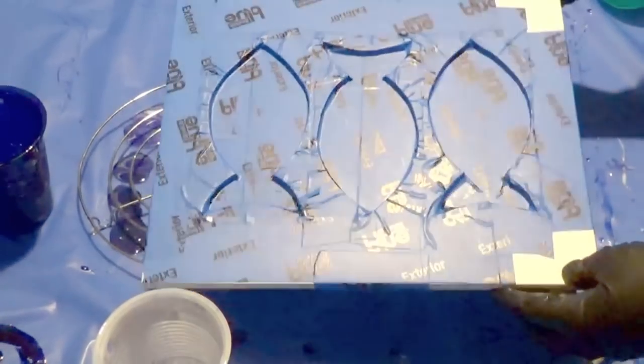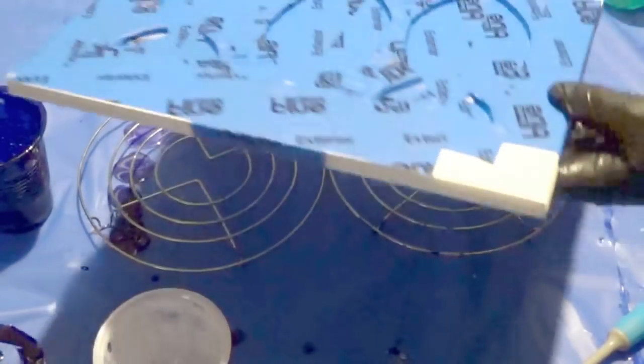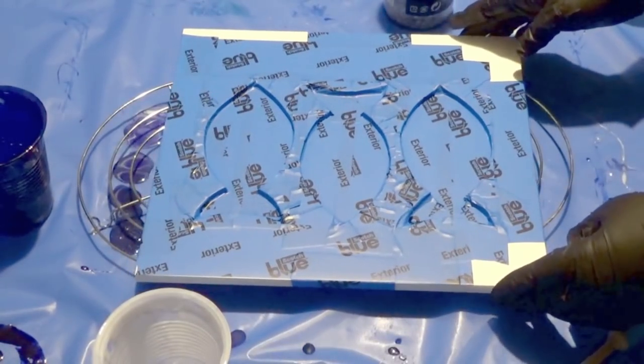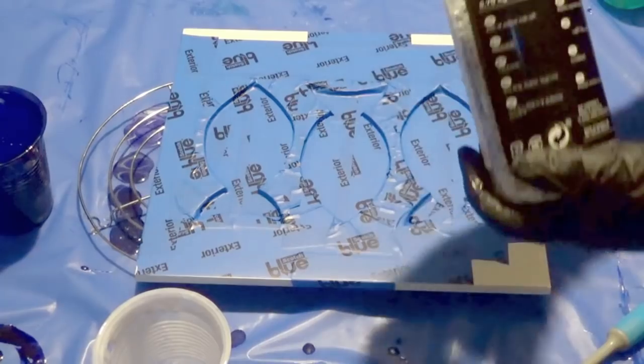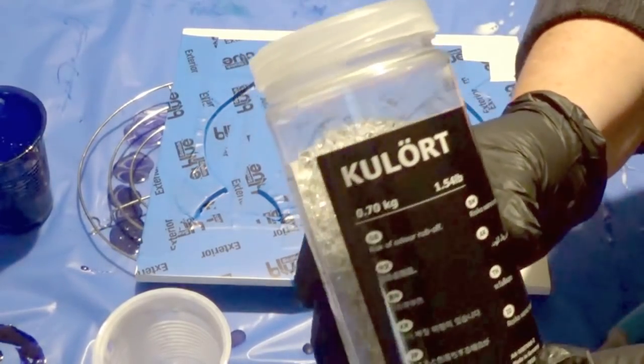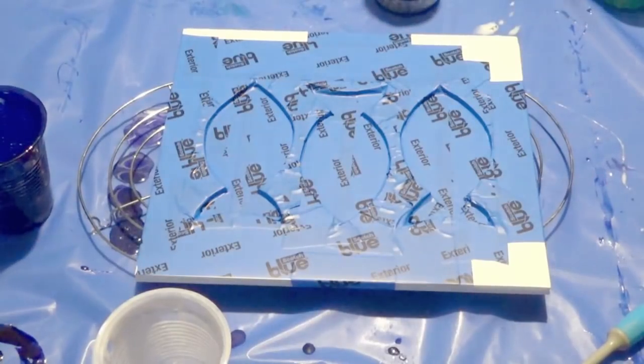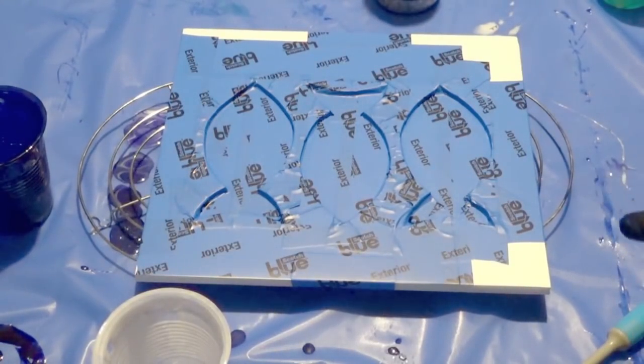Okay so for this video I started off with two pieces of foam board. I printed off the design and then cut one of the foam boards and placed it on top of the other and then using painters tape I taped the base so that it would be easy to remove the resin.